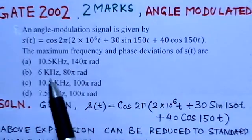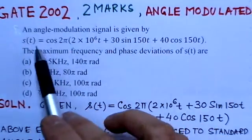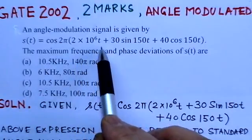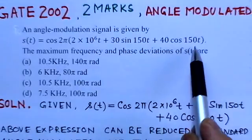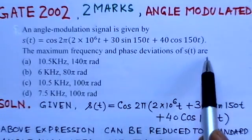So we read out the problem here. An angle modulated signal is given s(t) = cos 2π(2×10^6)t + 30 sin 150t + 40 cos 150t. The maximum frequency and phase deviation of s(t) are: